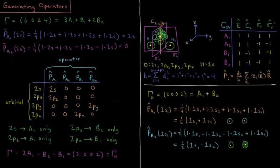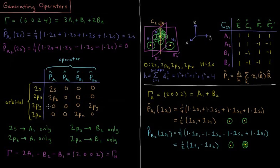If we repeat this operation for 2Pz, we get the same result — 2Pz is an A1 orbital. If we do this for 2Py, the one in the molecular plane, we find it is a B2 orbital; the B2 projection operator gives 2Py back, while the others give 0. For 2Px, which is perpendicular to the molecular plane, that is a B1 orbital — it only shows a non-zero value under the B1 projection operator.